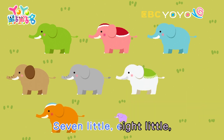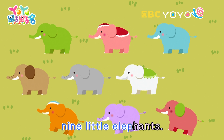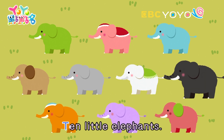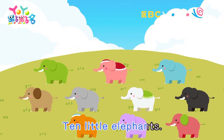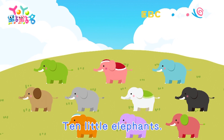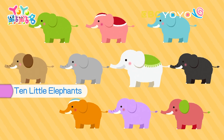One little, two little, three little elephants. Four little, five little, six little elephants. Seven little, eight little, nine little elephants. Ten little elephants.